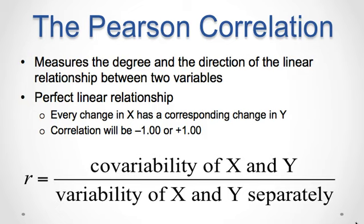When there is a perfect linear relationship, every change in the X variable is accompanied by a corresponding change in the Y variable. For example, every time the value of X increases, there is a perfectly predictable decrease or increase in the value of Y. In this case, co-variability of X and Y together is identical to the variability of X and Y separately, and the formula produces a correlation with a magnitude of positive 1 or negative 1. At the other extreme, when there is no linear relationship, a change in X does not correspond to any predictable change in Y, so there is no co-variability and the resulting correlation is 0.